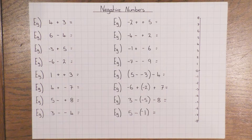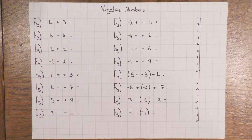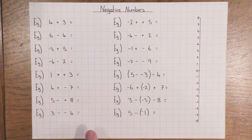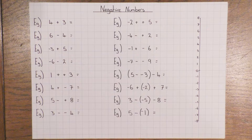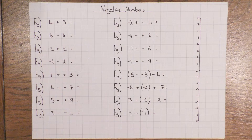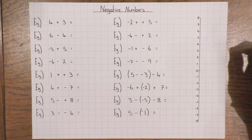Hi guys. In this video we're going to have a look at negative numbers and how we add, subtract, multiply and divide, and some of the common misconceptions and common errors that people make. The first page is purely adding and subtracting, and it's very important to realise that the rules we use for adding and subtracting are completely different to multiplying and dividing. That's probably one of the biggest mistakes people make.